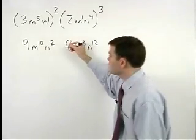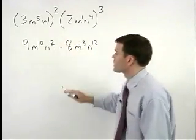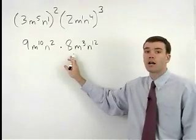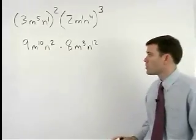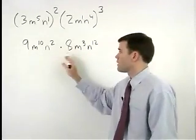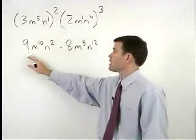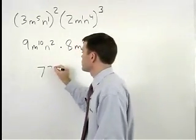Next we multiply these two terms together. And to do that we must apply the product rule from the last section. Remember we can simply multiply the coefficients together. 9 times 8 is 72.